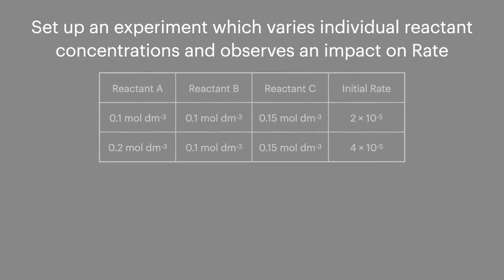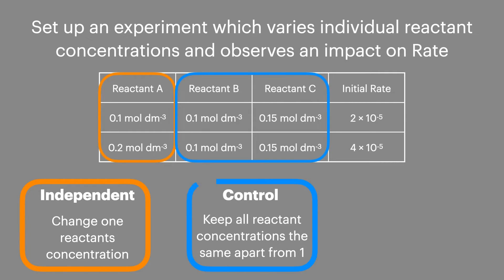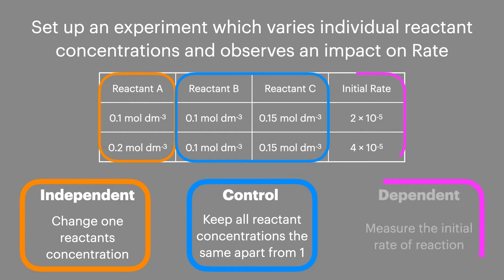When it comes to determining the orders of reaction for each reactant so that you can work out the rate equation, you need to set up an experiment which varies each reactant concentration independently in turn. This will allow you to see how it changes the initial rate of reaction. To do this, start by identifying the independent variable — the concentration of the reactant you're going to change. Then the control variables: these reactant concentrations will be kept constant to allow you to observe the effect of the one reactant you are changing. And then finally the dependent variable, which will show how the initial rate has changed.